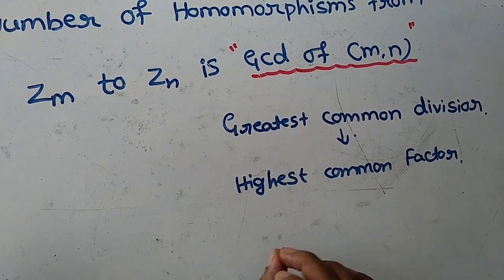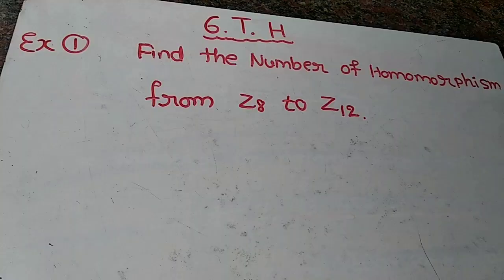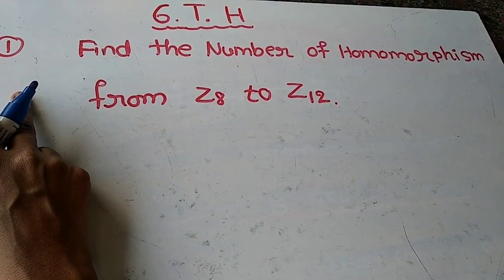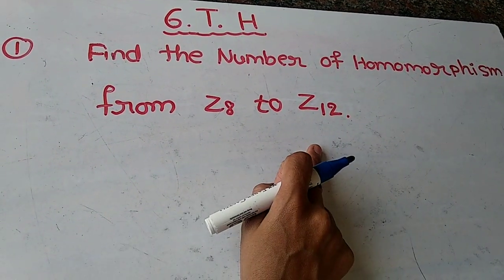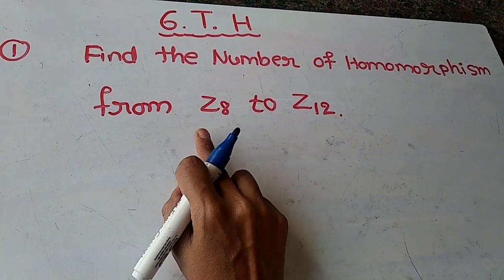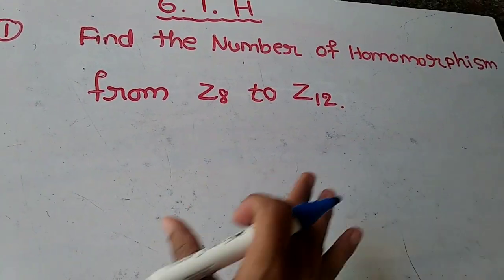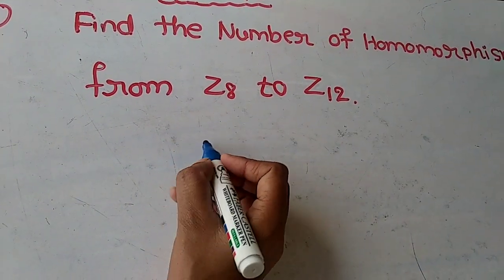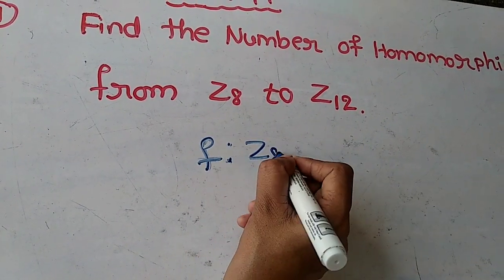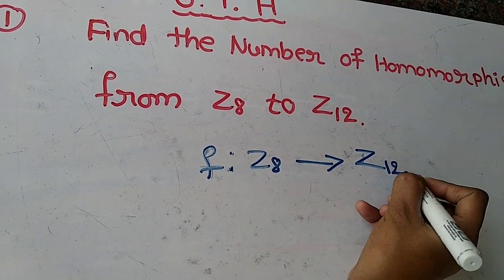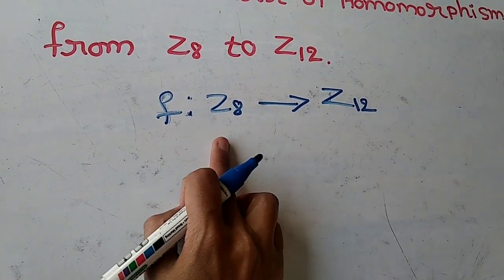There are three to four types for finding the GCD, but I am using the easiest method — the division method. Let us see an example to make this clear. The question is: find the number of homomorphisms from Z8 to Z12. Our function is from Z8 to Z12, so this is in the form f from ZM to ZN.